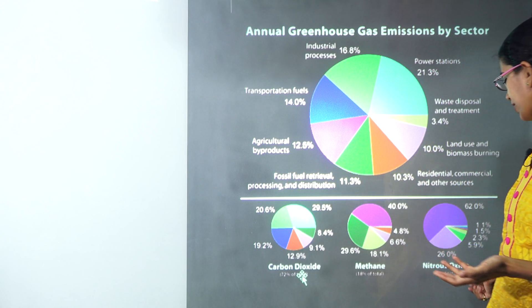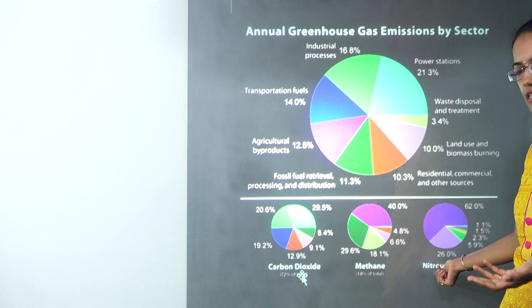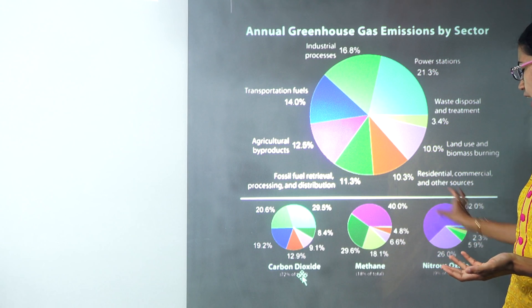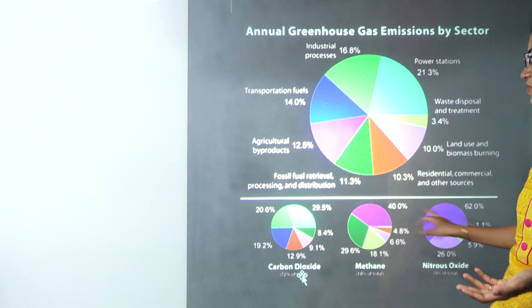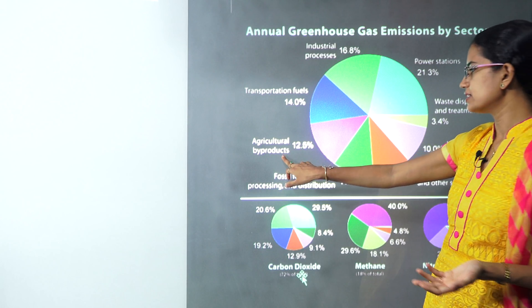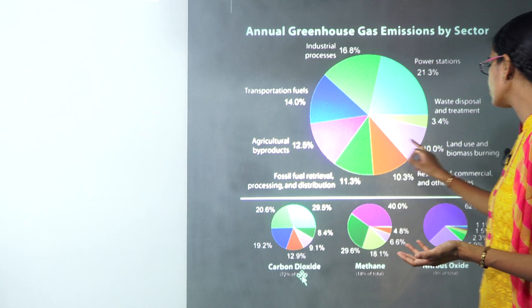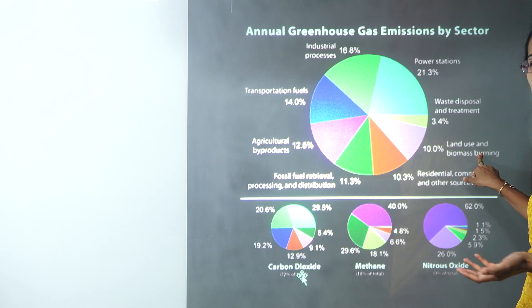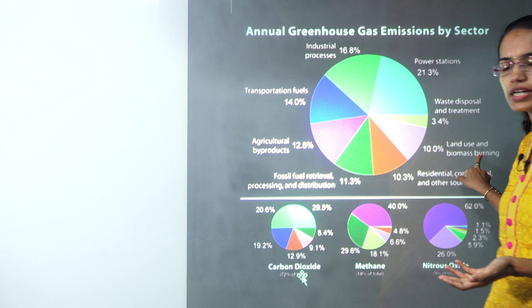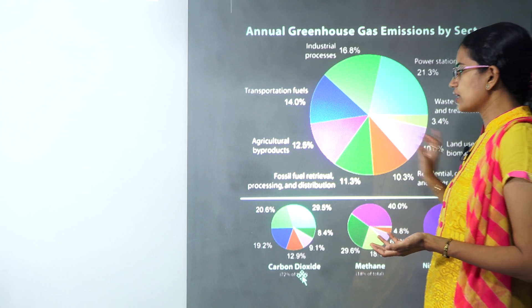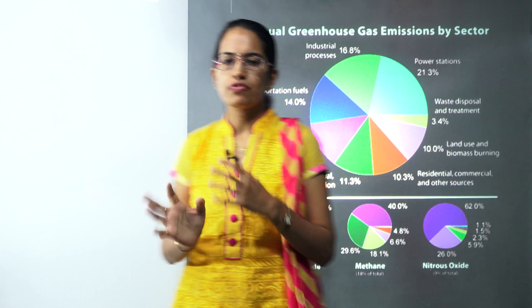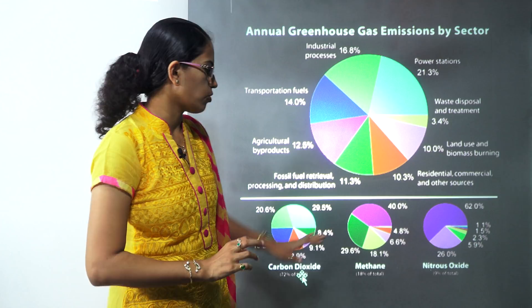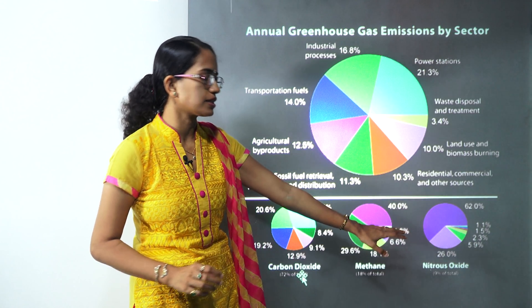Similarly, when we talk about nitrous oxide, the highest proportion released in the atmosphere is by agricultural byproducts followed by land use and biomass burning. So these are the major proportions of release caused by the various gases.